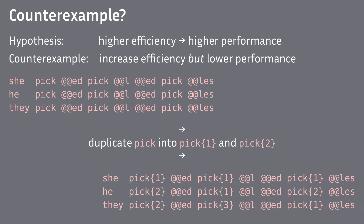Our hypothesis says that tokenization with higher entropy efficiency will lead to a better model. So the counterexample would be that we increase the efficiency but worsen the model. The mechanism is a bit technical but still simple: we take a very high frequency unit and create duplicates of it that have the same surface form but are represented as different embedding units.